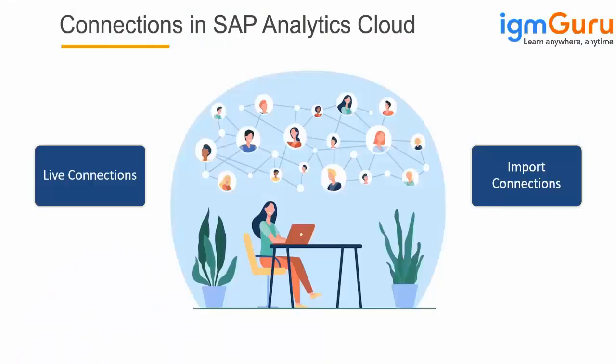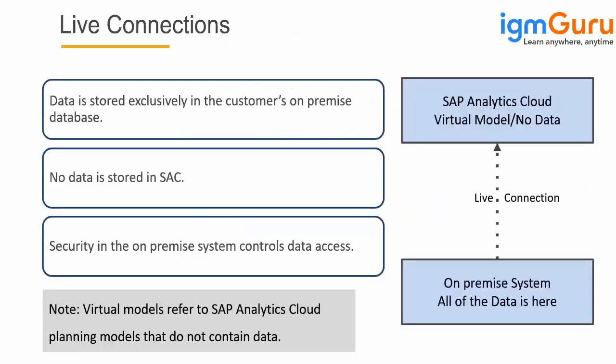There are two types of connections that are readily available now. What is a live connection? Basically, a live connection is when you can connect to your database system and fetch the data without importing it to the SAC server. You are not copying the data; rather, you are just querying the data on the fly.